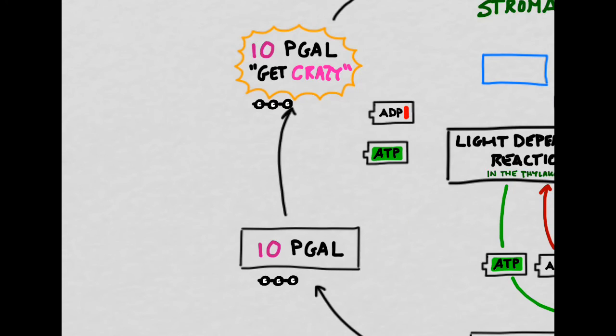In the next step of the process, 10 PGAL will rearrange themselves in a process that we will simply refer to as 10 PGAL get crazy. And the reason that we're keeping it simple is because people can spend decades studying how all of these crazy reactions happen,